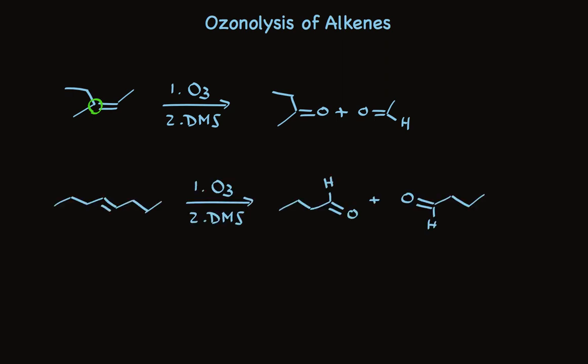Here's another case. This time we have a disubstituted double bond. It's cleaved to make two aldehydes. Well, it's only one, isn't it? This alkene is symmetrical, and when it's cleaved, it makes a single aldehyde. So I'm going to write this simply as a single structure.